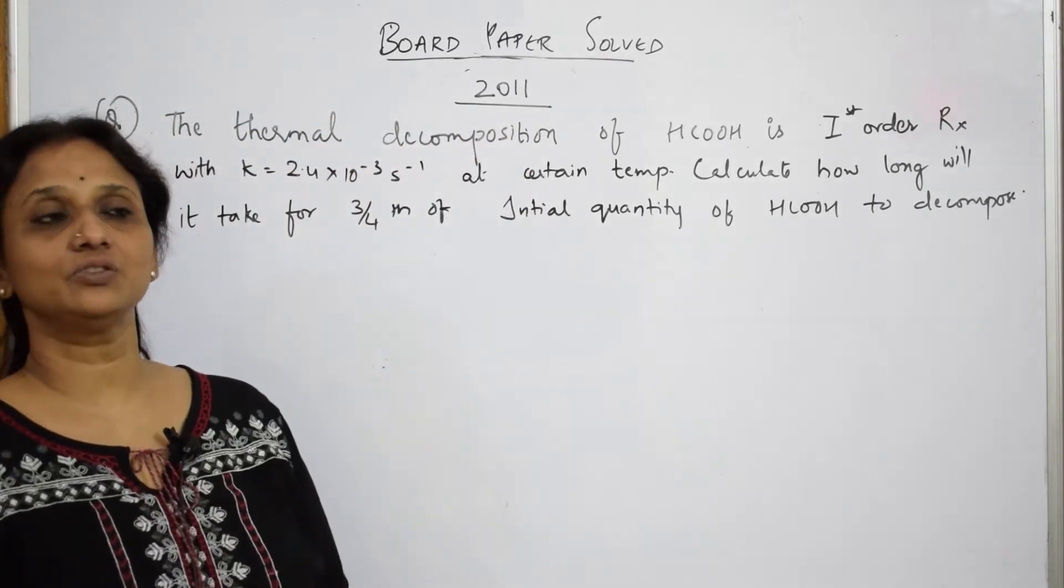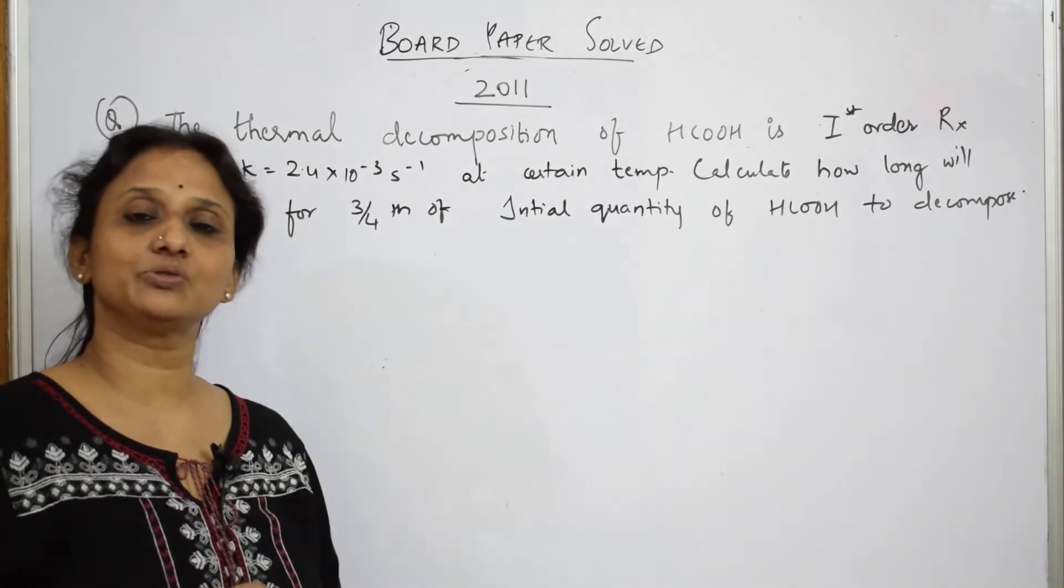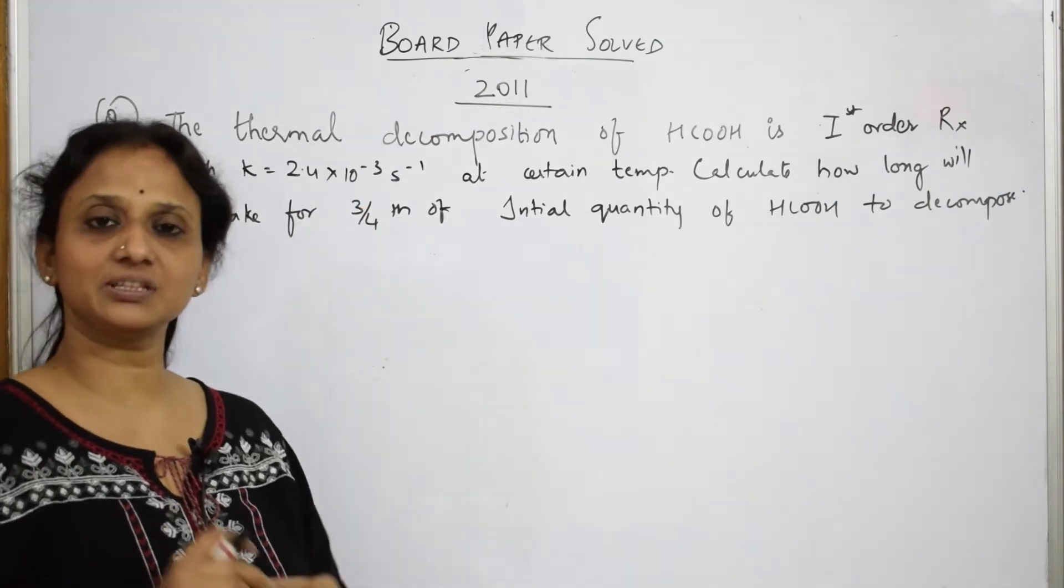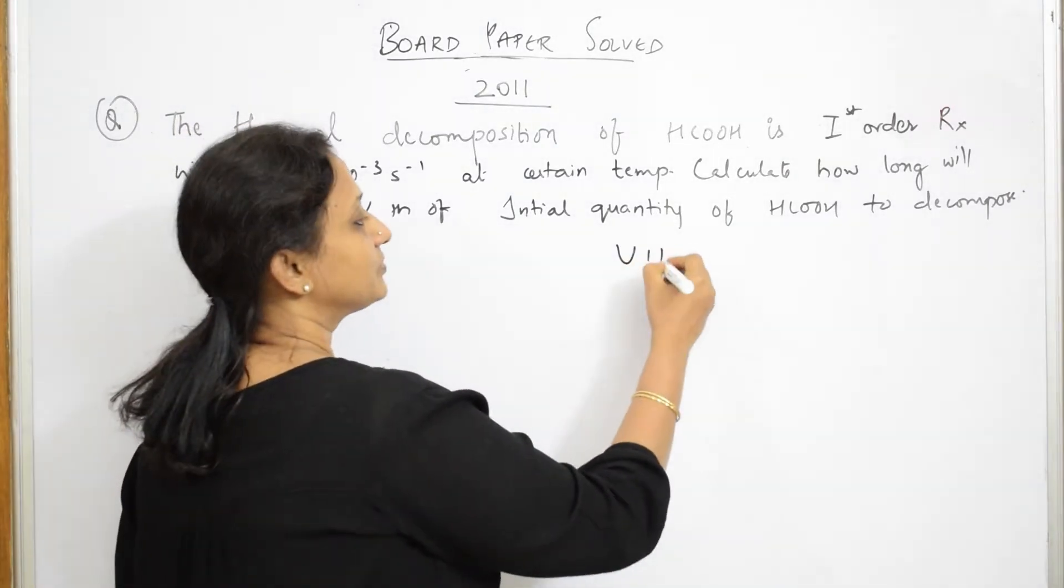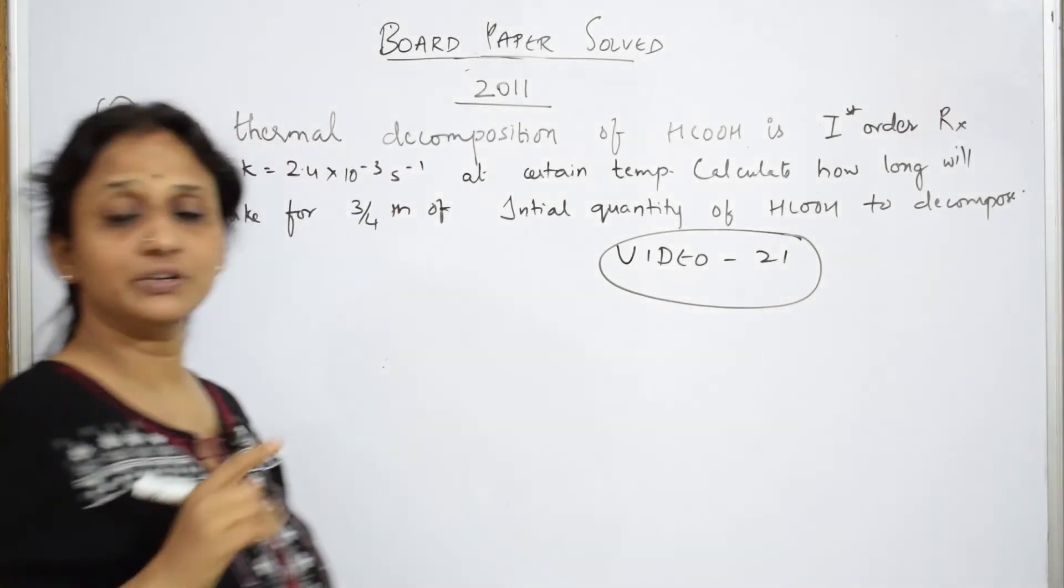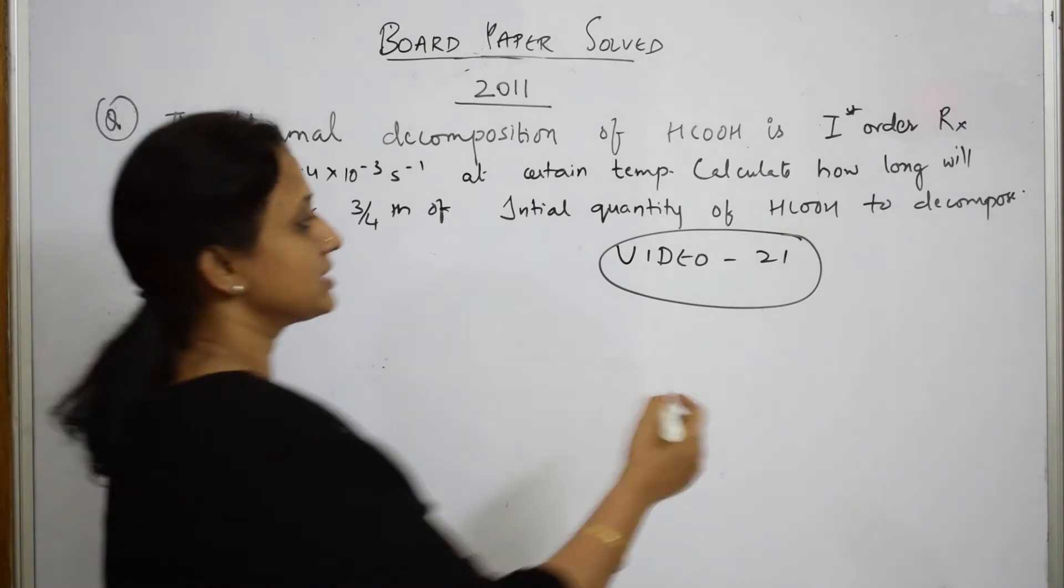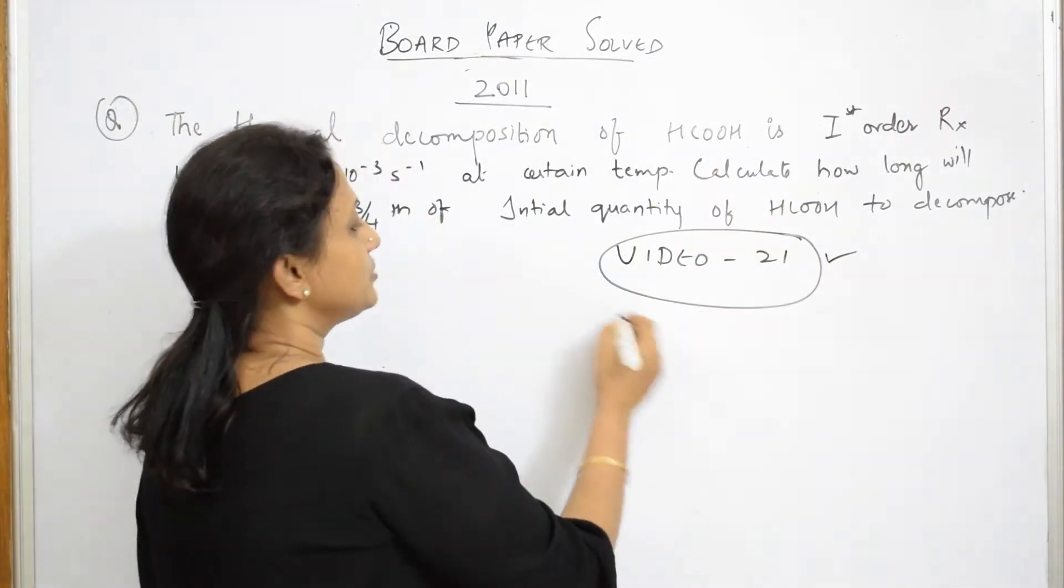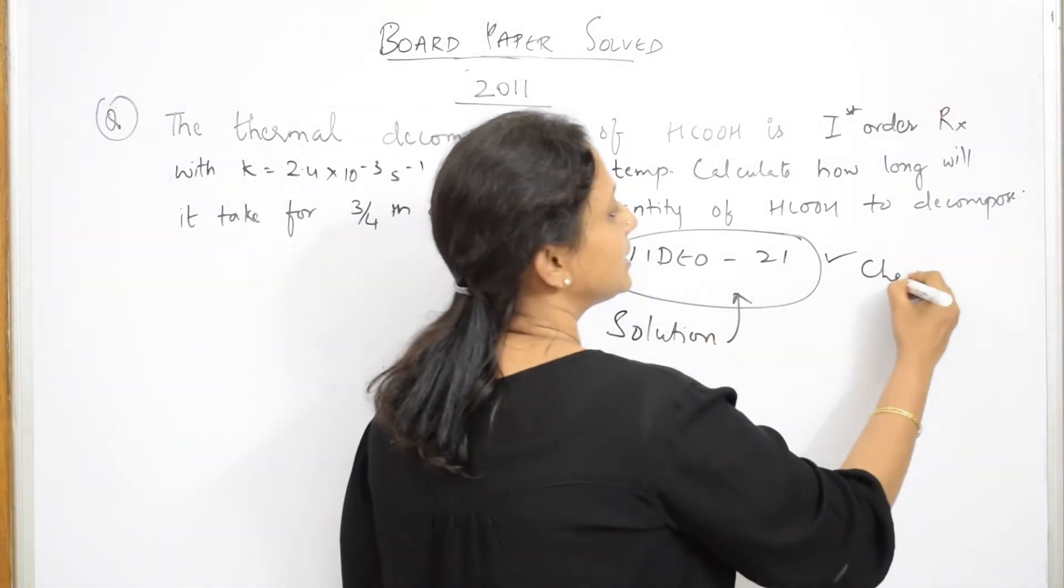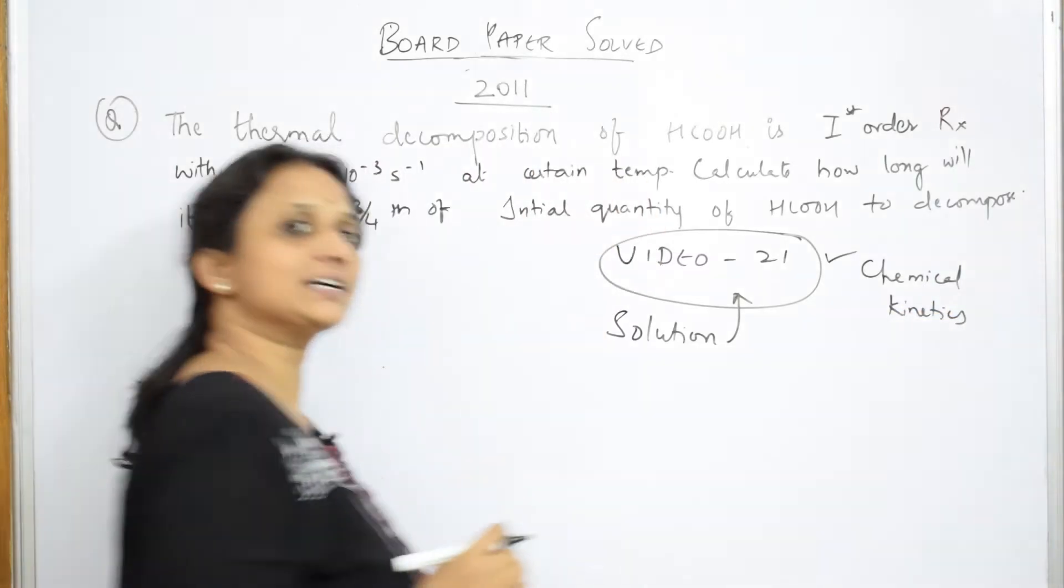Hope you would have watched the earlier videos. I have done the same question, exactly the same question with exactly the same units also. Everything, the data, the information, the question everything is the same. Just watch that video. Let us label it 21. This is your 21st video where I have done this numerical. So for solution, watch video 22 or 21 under chemical kinetics chapter. It is the same, exactly the same question.